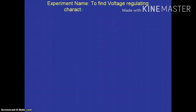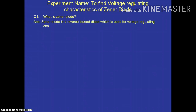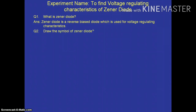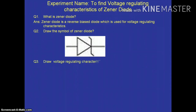The next experiment is to find the voltage regulating characteristics of a Zener diode. First question: what is a Zener diode? A Zener diode is a reverse-biased diode which is used for voltage regulating characteristics. Next question: draw the symbol for a Zener diode. It has a triangle shape structure along with an S-type attachment.